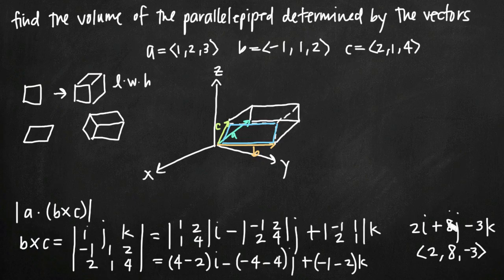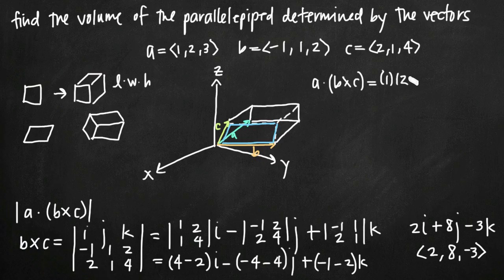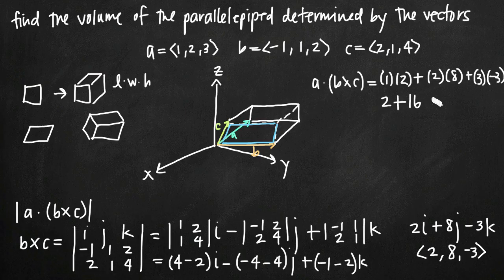Now to find the dot product of a and the cross product of b and c, we take a = (1, 2, 3) dotted with (2, 8, −3). For the dot product, we multiply corresponding components and add the products: x-components 1 and 2 give 1×2 = 2; y-components 2 and 8 give 2×8 = 16; z-components 3 and −3 give 3×(−3) = −9. So we get 2 + 16 − 9.